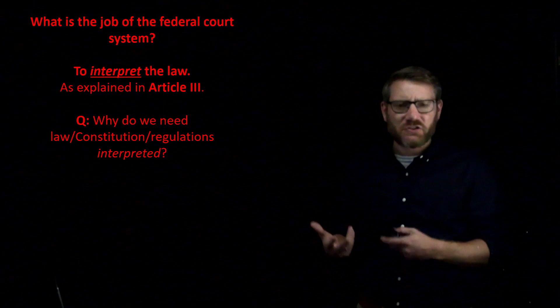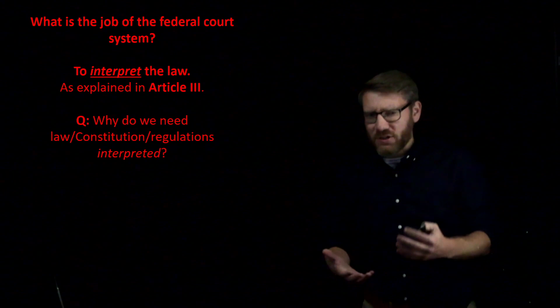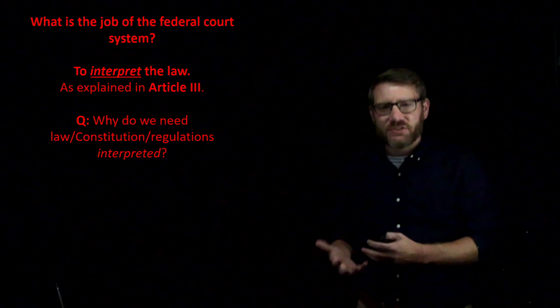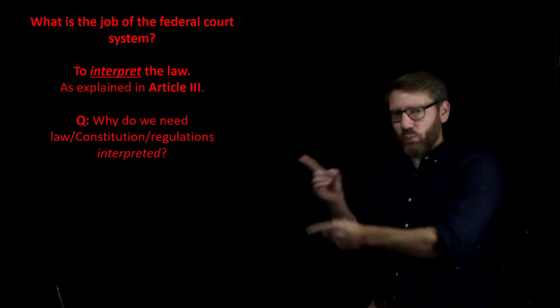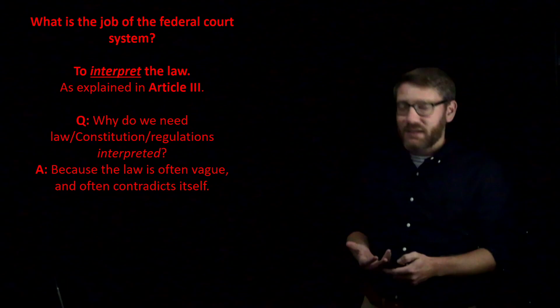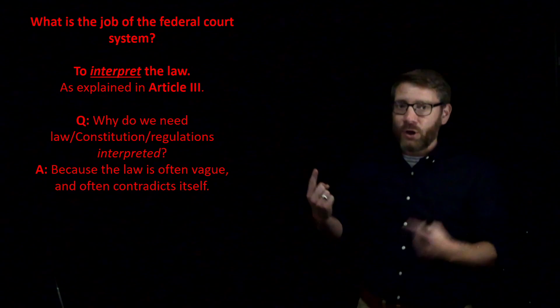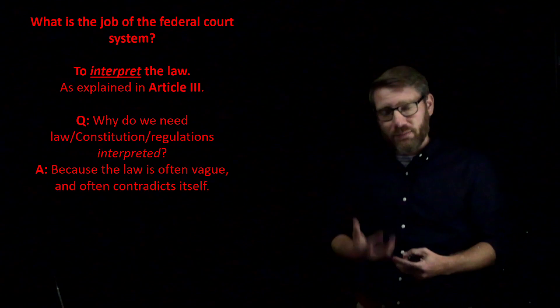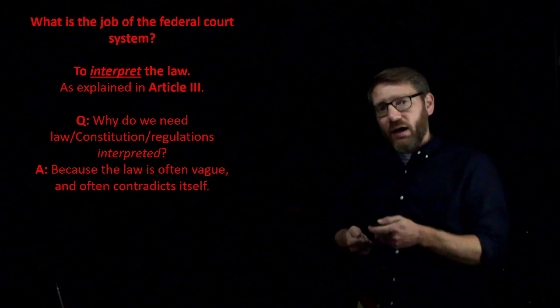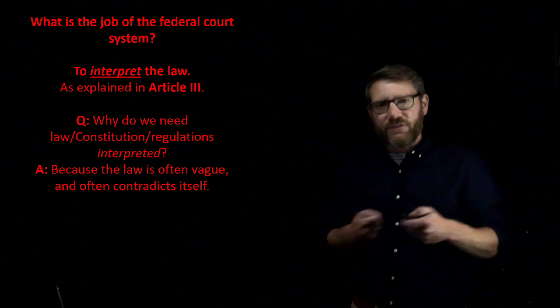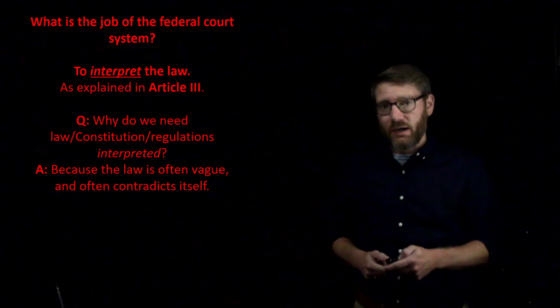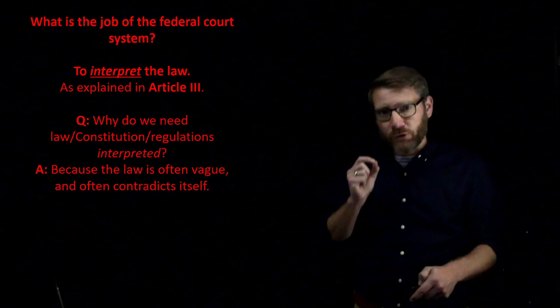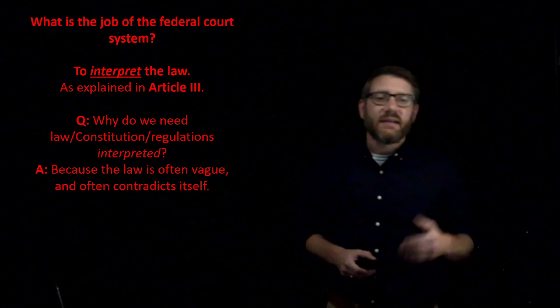Why is interpreting the law something we need the judicial branch to do? Can't the law just speak for itself? Can't the Constitution just speak for itself? Well, generally that's because the law and the Constitution are vague. Many regulations can be vague. Sometimes the law and regulations collide, sometimes the law and the Constitution collide. What we need is an arbiter — and that's what the court system is supposed to be: an arbiter to settle these vaguenesses and disagreements whenever they arise.